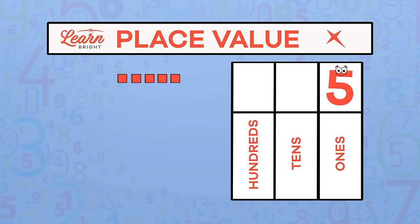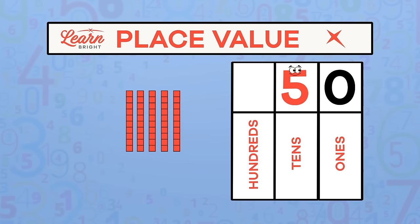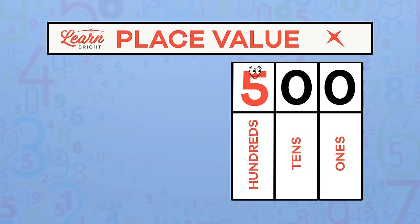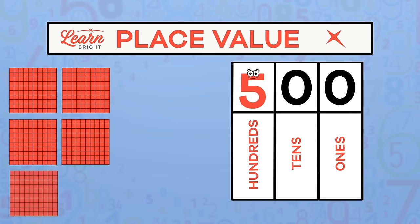But if we move the 5 to the tens place, we now have five tens, or the number 50. And if we move that 5 over one more time to the hundreds place, we now have five hundreds, or 500.